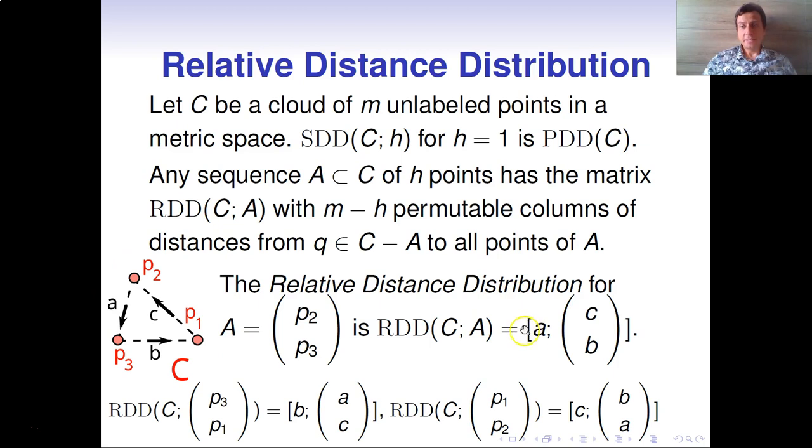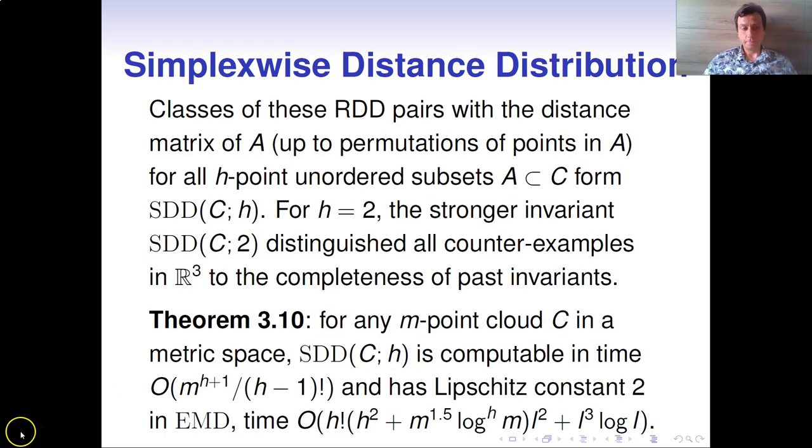Which is a pair of two objects: first, the distance matrix on our subset A, and in this case it is a single number A, the length of that side from P2 to P3; and also the matrix of distances from all other points to our fixed points P2 to P3, so these are sides C and B. By choosing all possible unordered subsets A from our given point cloud, we construct a large collection, simplex-wise distance distribution.